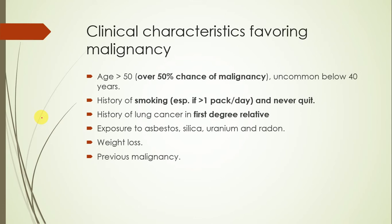Our first task is to differentiate whether the nodule is benign or malignant. Here is a list of clinical characteristics that suggest malignancy. If the patient is older, there is a higher probability of having a malignant lesion — in patients over 50 years there is a 50% risk, and malignancy is quite uncommon in younger patients. History of smoking is one of the most important factors, and the frequency and duration of smoking corresponds to the risk of developing malignancy.